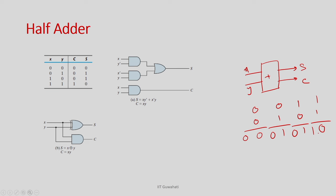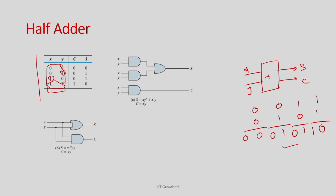1+1 is basically 2. If I put this into a truth table, it shows the 4 possible values of x and y, the corresponding sum, and the carry. Whenever there is an odd number of 1s the sum output is 1; carry is only 1 when both inputs are 1.